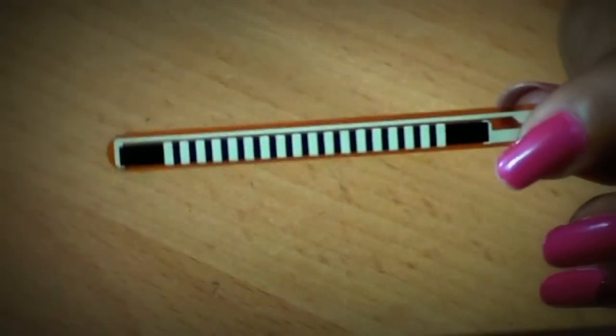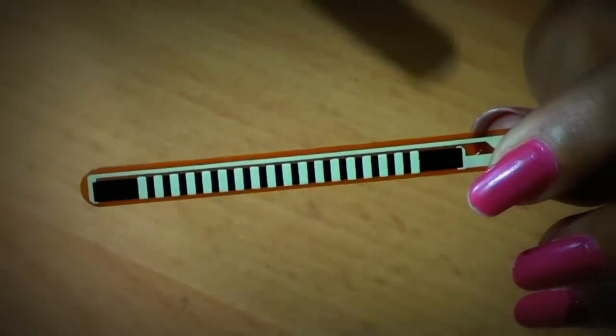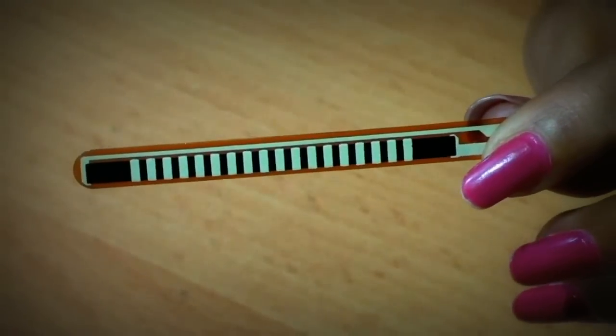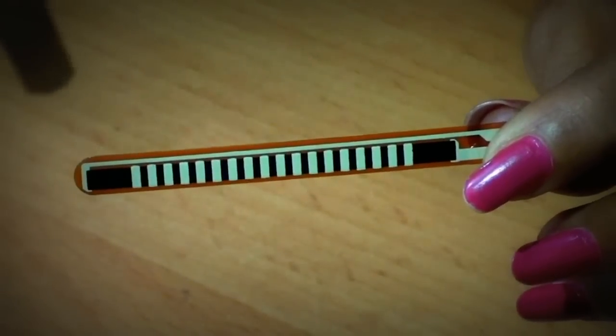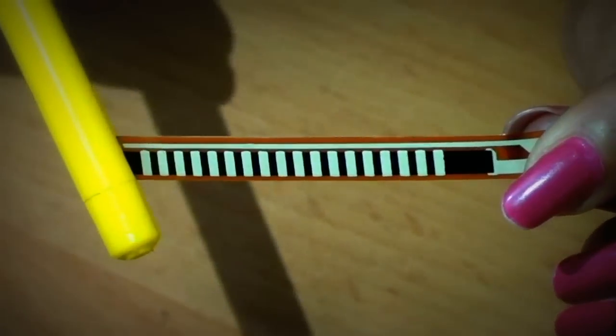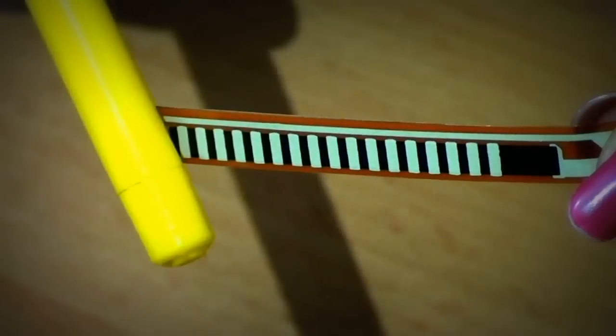As the sensor is flexed, the resistance varies across the sensor. That is, it increases and decreases. When the sensor is flat, it keeps the normal resistance. When it bends towards level to 45 degrees, resistance increases.